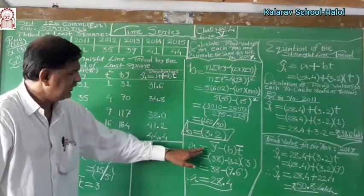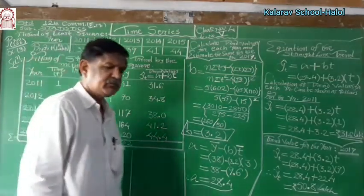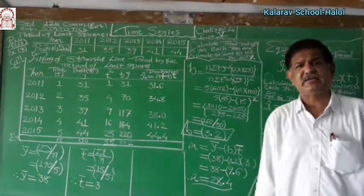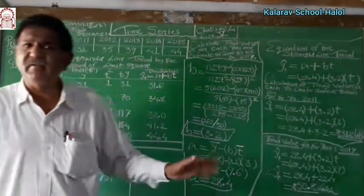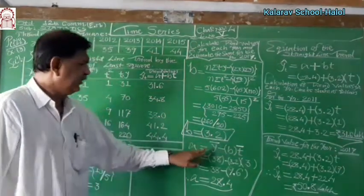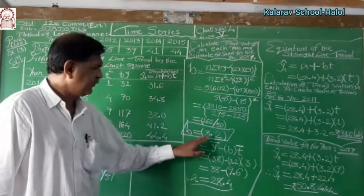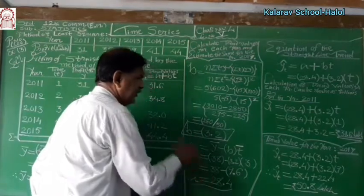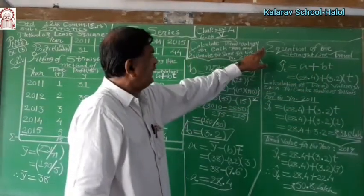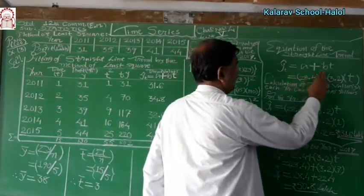From this we compute A. A equals Y-bar minus B times T-bar. Y-bar is 38, T-bar is 3, B is 3.2. So 3.2 into 3 is 9.6, and 38 minus 9.6 equals 28.4. Therefore A is 28.4 and B is 3.2. This is an important calculation. After completing the table, substitute A and B into Y-cap-T equal to A plus B times T — this is the standard form of the equation of the straight line trend by the method of least squares. So Y-cap-T equals 28.4 plus 3.2 times T.